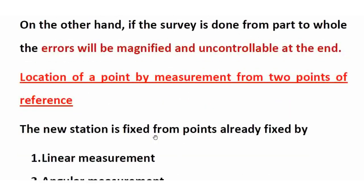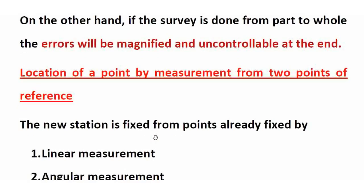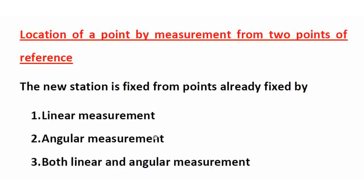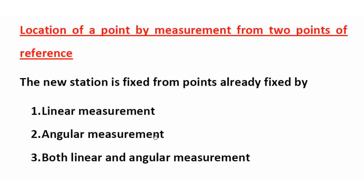Location of your point by measurement from two points of reference — this is the second principle of surveying. From two reference points we will fix new points. The new station is fixed from points already fixed by linear measurement and angular measurement, or both linear and angular measurement.